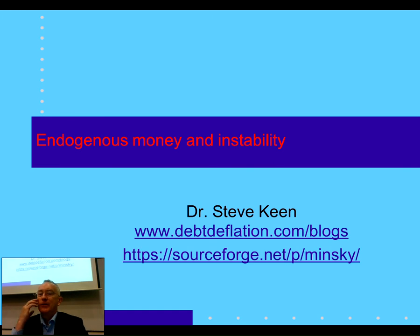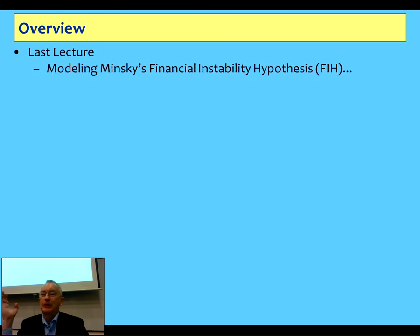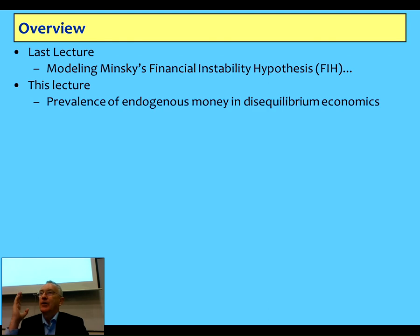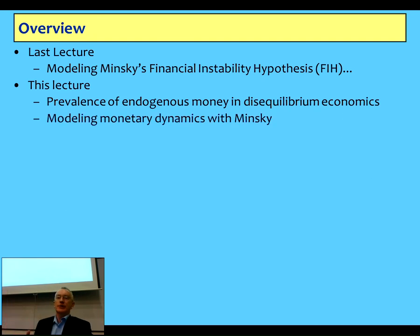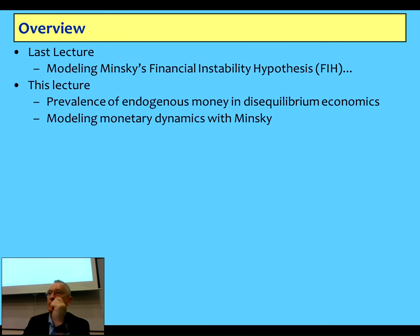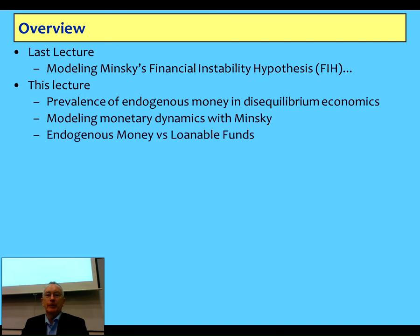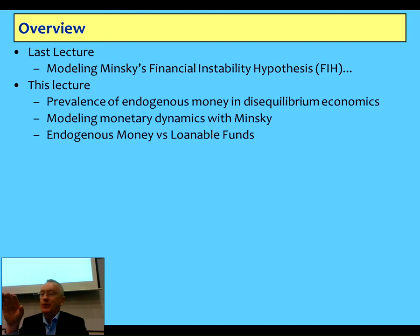What I want to talk about today is the role of endogenous money and instability. Like last week I talked about the financial instability hypothesis and how to model it. But today, when you look at all the people who are prominent in disequilibrium economics, they've also focused on the role of the banking sector. That's a major contrast to neoclassical thought, which ignores the banking sector and of course is equilibrium focused. I want to show you the really special features of Minsky — the capacity of the software package to model monetary dynamics, which is the reason it's been invented. Minsky is the only one you can do the monetary modelling with. And then to use that to contrast the endogenous money perspective with loanable funds, which is the dominant attitude in neoclassical economics.